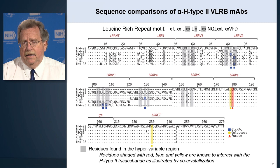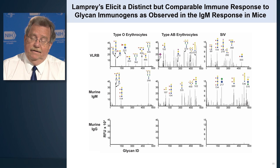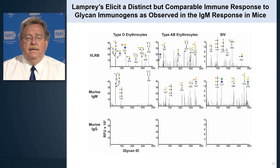Lamprey antibodies are very easy to crystallize. Because they themselves are not glycoproteins — they have no sugars attached and no modifications — they are tiny little proteins that are easily crystallizable and can readily be co-crystallized with carbohydrate antigens. In many cases we've identified the specific amino acids that make contact with the sugar itself.